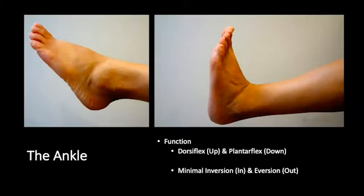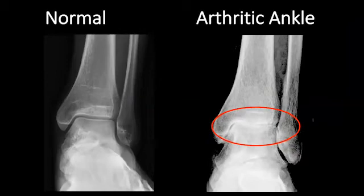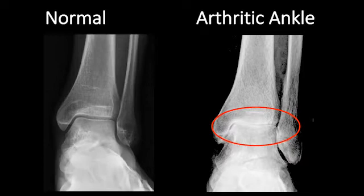The ankle joint functions in dorsiflexion and plantar flexion, and really has minimal inversion and eversion — that's the main function in the biomechanics of the ankle. Dr. Brodsky gave a great talk about the biomechanics, which is much more complex. Normal ankles have a good joint space, but when we get an arthritic ankle, we lose that joint space, and that affects our mechanics, our gait, and leads to chronic pain.